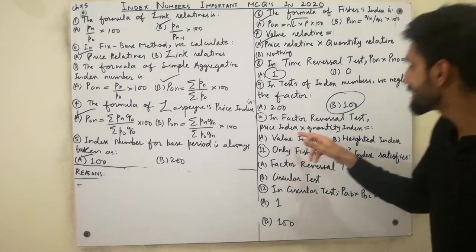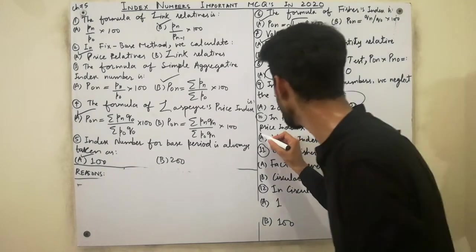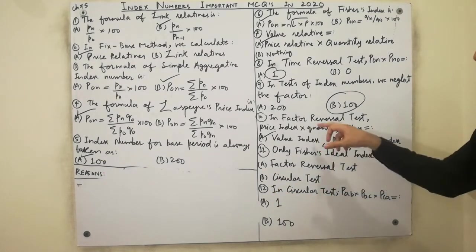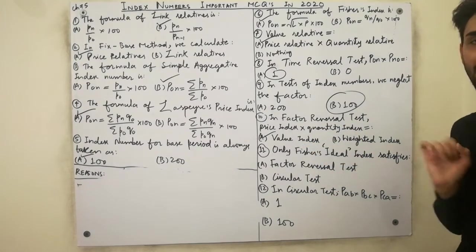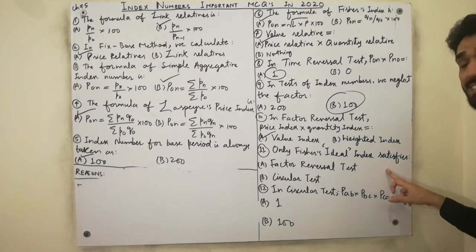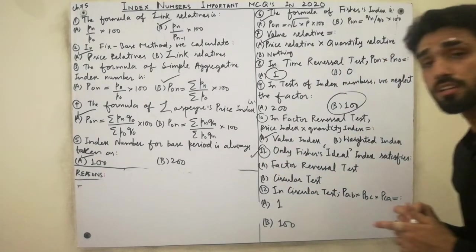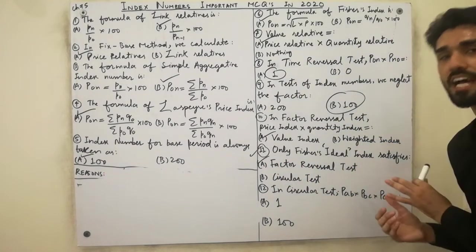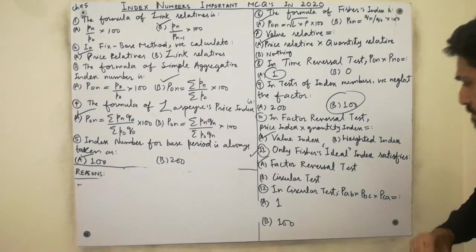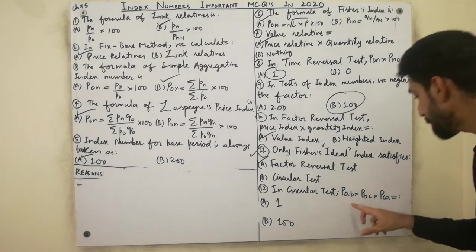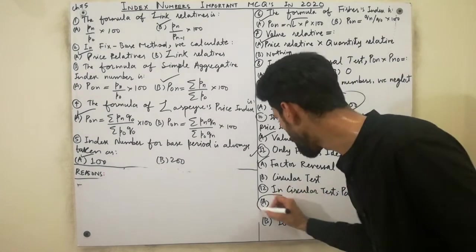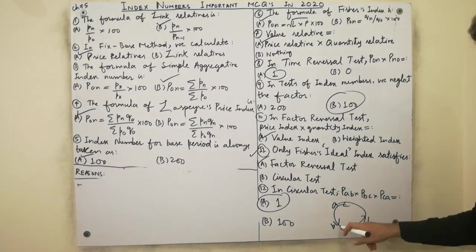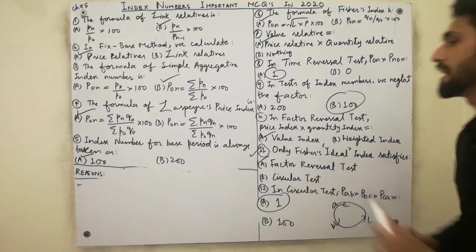In the factor reversal test, price index multiplied by quantity index is always equal to the value index. Only Fisher's ideal index number satisfies the factor reversal test — must remember that. Now the last MCQ: in the circular test, PAB cross PBC cross PCA is always equal to 1. The rotation is anticlockwise — PAB, PBC, PCA — and their product is always equal to 1.